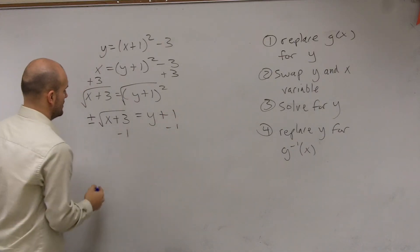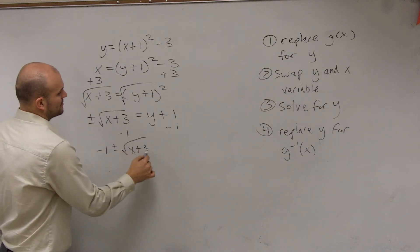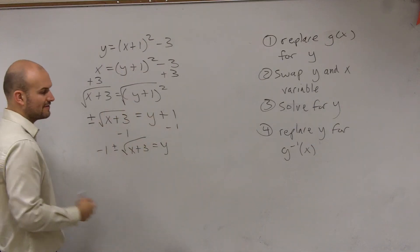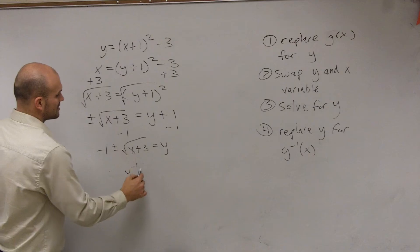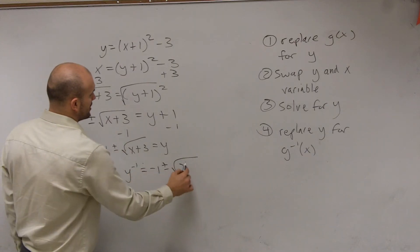Then I subtract 1. So I'll have negative 1 plus or minus the square root of x plus 3 equals y. Then I replace my y for g of f of x. Well, I don't have a g of x or f of x. So I can say y inverse is going to equal negative 1 plus or minus the square root of x plus 3.